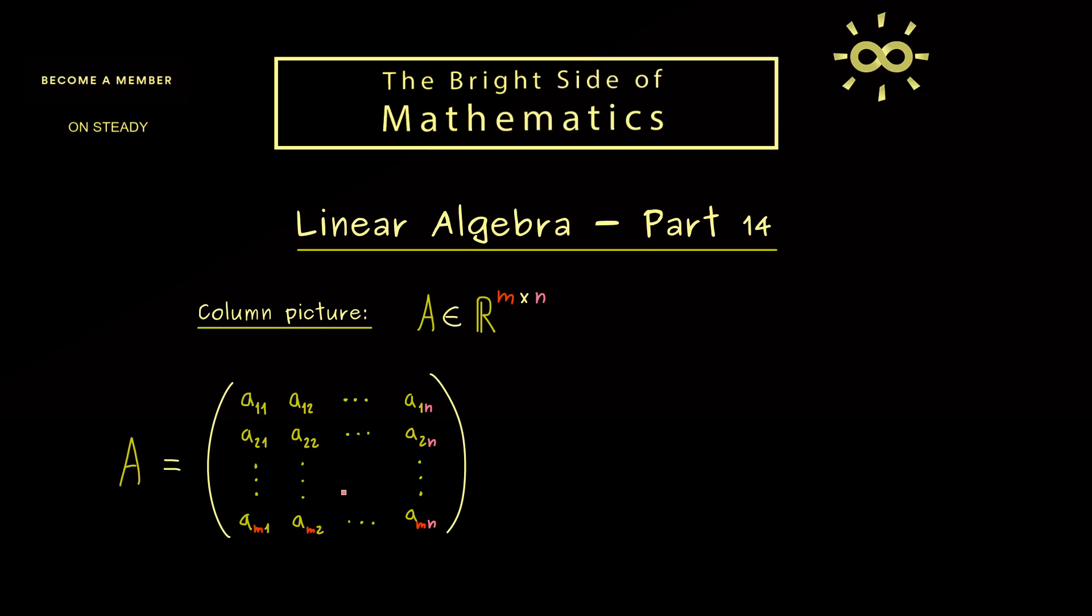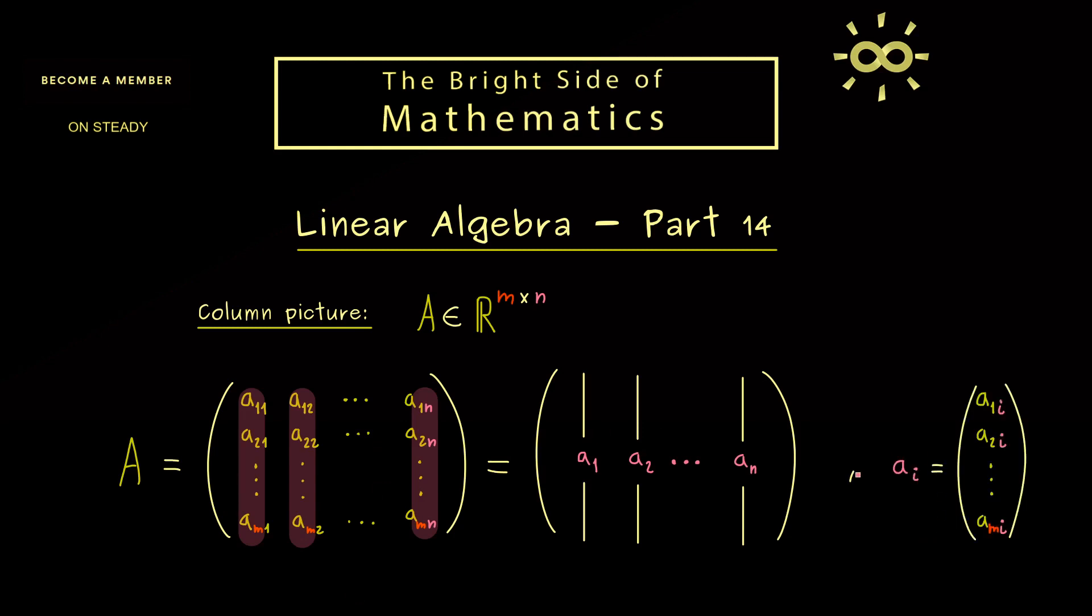And now the overall idea is, that instead of seeing this as a table, we see it as a collection of columns. In this sense, we can just give the columns new names. To keep it simple, I call the first column just A1. Then the second column is A2 and then it continues until we have the last column An. So you see, this is not so complicated. Each column is just a column vector with m components. Or in other words, the vector Ai is now defined by using the components of the matrix A with 2 indices.